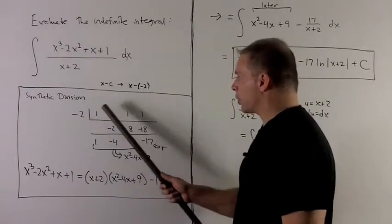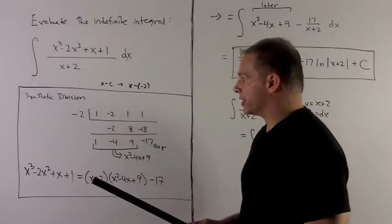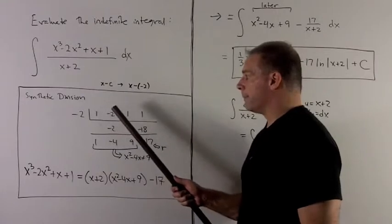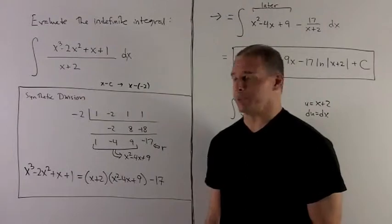For this first row, we're going to load up all the coefficients for my polynomial on top. So I'll be 1, minus 2, 1, and 1. And now I can start the synthetic division.